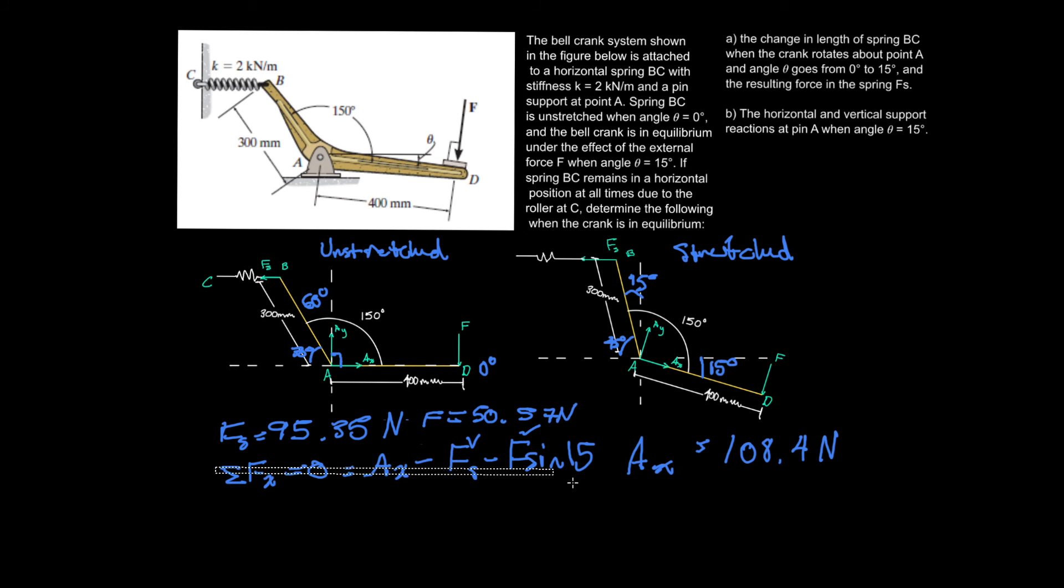And so we can clear this up. And then the final step, if you haven't caught on yet, which is completely fine if you haven't, is to do the sum of the forces in the y equaling to 0, which is equal to A in the y minus F cos of 15. And then, of course, we know F. So then solving for A in the y, we're going to get that A in the y is equal to 48.84 newtons.